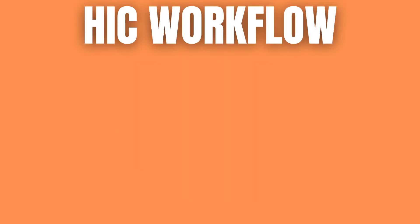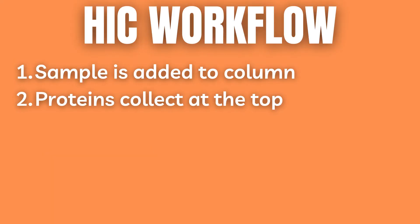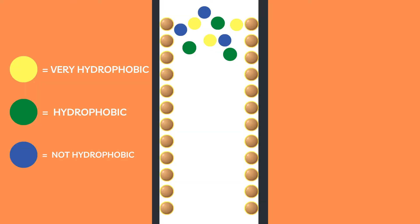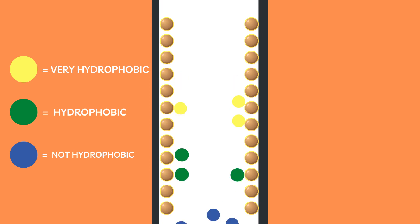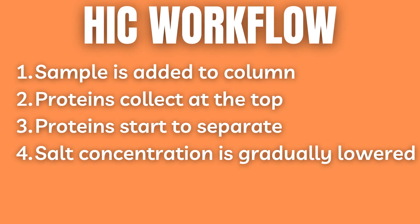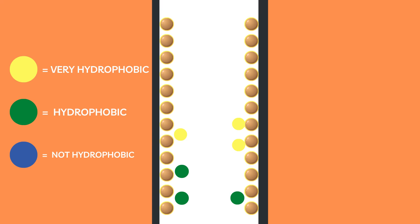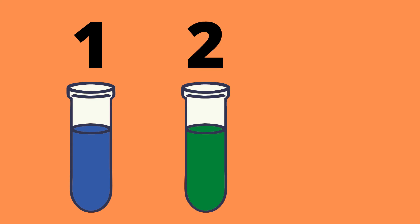The separation is carried out in five main steps. First, the sample is added to the column. Second, proteins collect at the top. Thirdly, proteins begin to move through the column, pulled by gravity, but they start separating based on how much they are attracted to the HIC resins, which again is dependent on their level of hydrophobicity. Fourth, we gradually change the salt concentration, ensuring that only the most water-hating hydrophobic proteins stick, and eventually they also have to give up and get eluted along with the rest of the proteins. Fifth, during this changing salt concentration, we can start collecting our proteins from the least hydrophobic to the most hydrophobic.